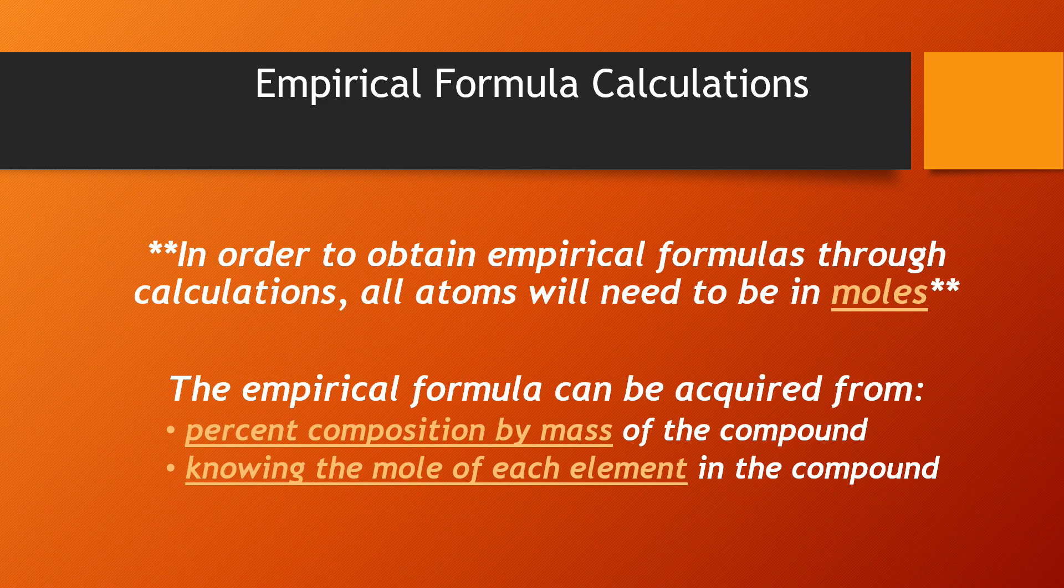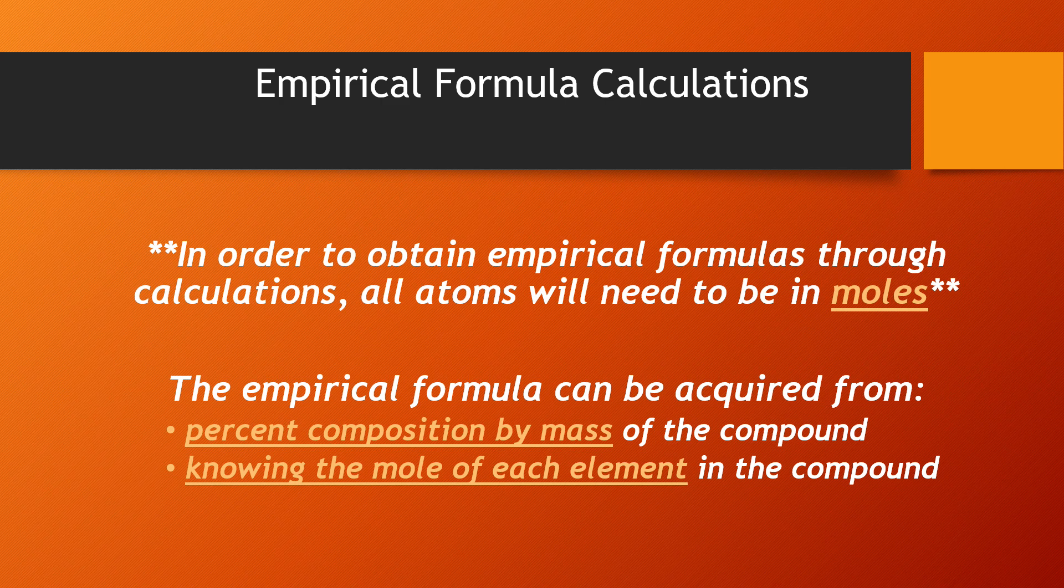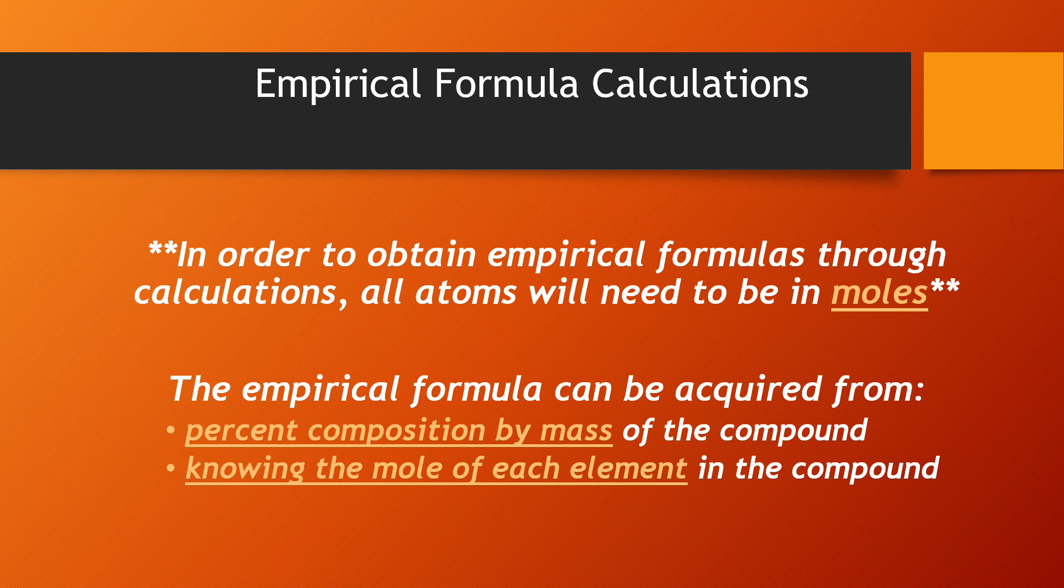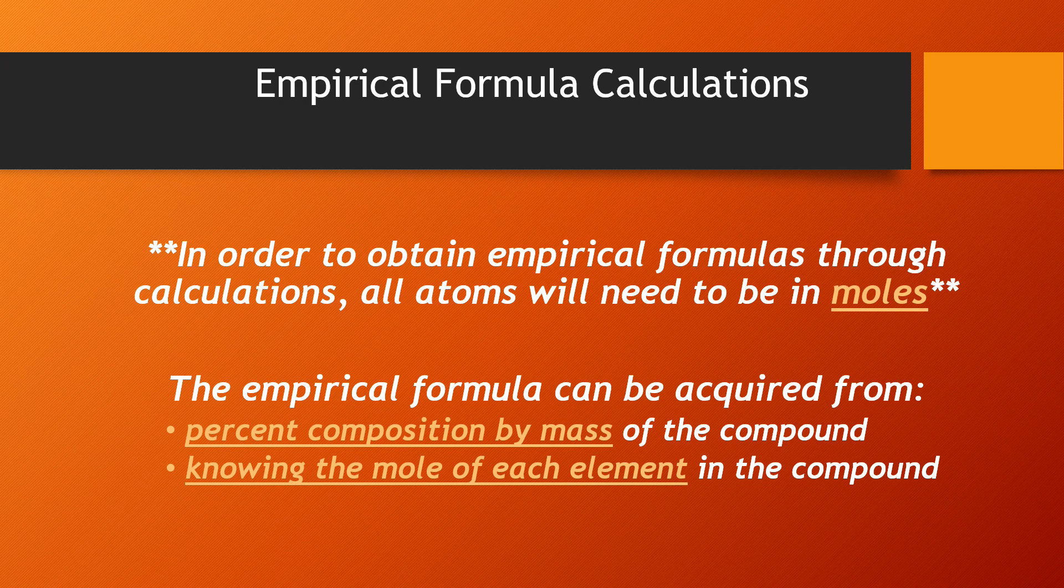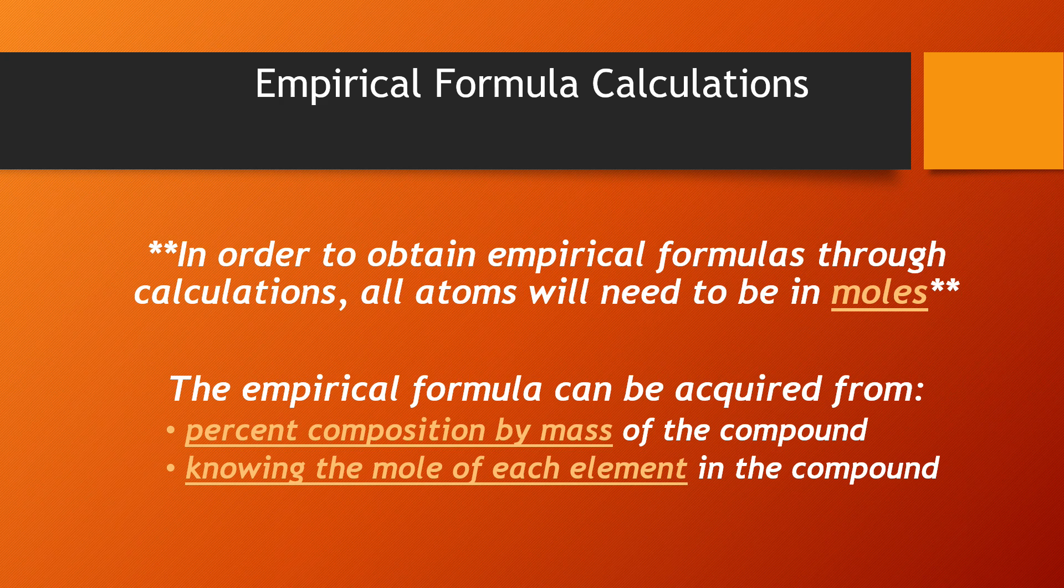So here are some notes to consider when doing empirical formula calculations. In order to obtain empirical formulas through calculations, all atoms will need to be in moles. This means that anything that is given in the question must be converted to moles. Also, the empirical formula can be found from either the percentage composition by mass of the compound, or by knowing the mole of each element in the compound.